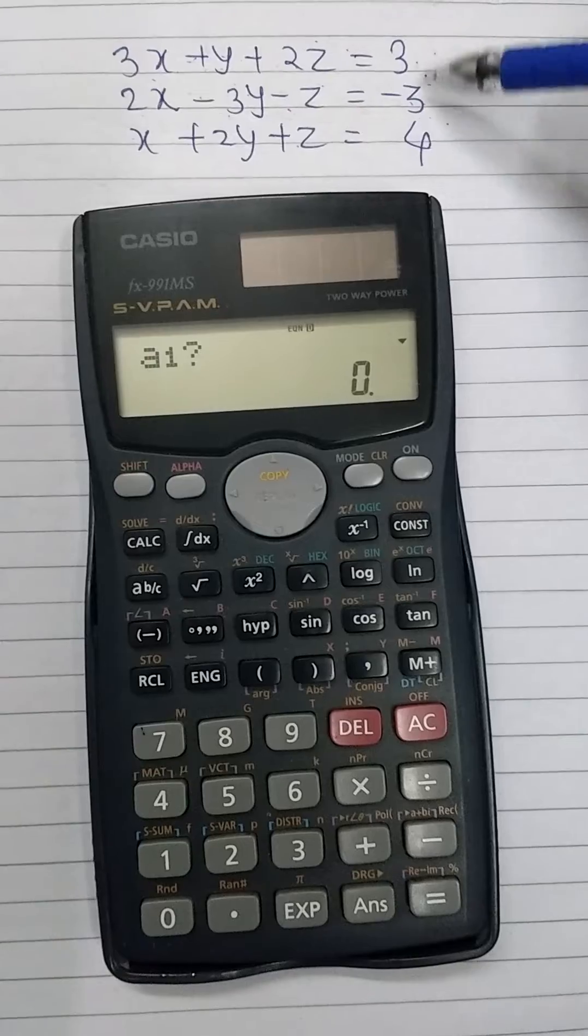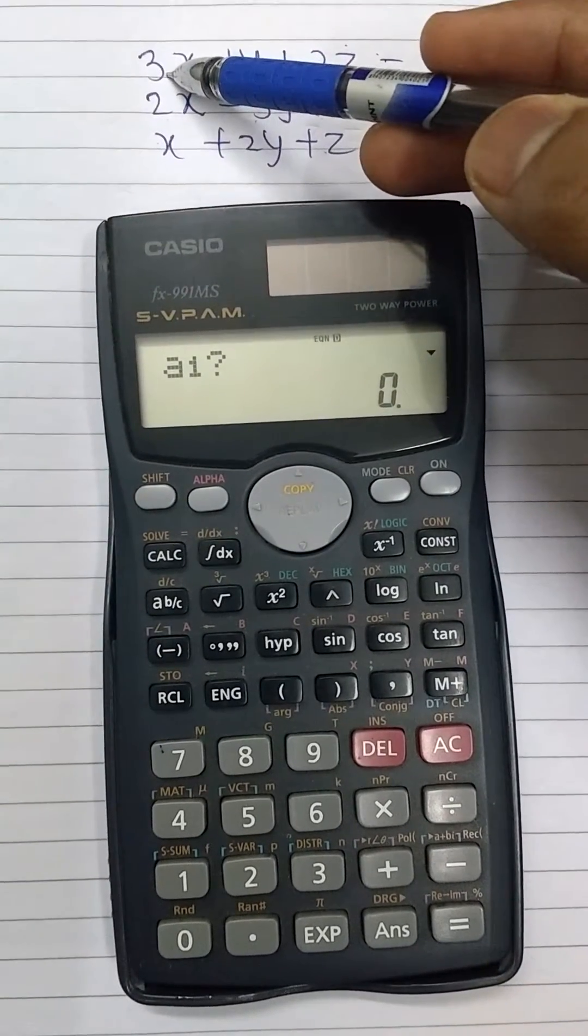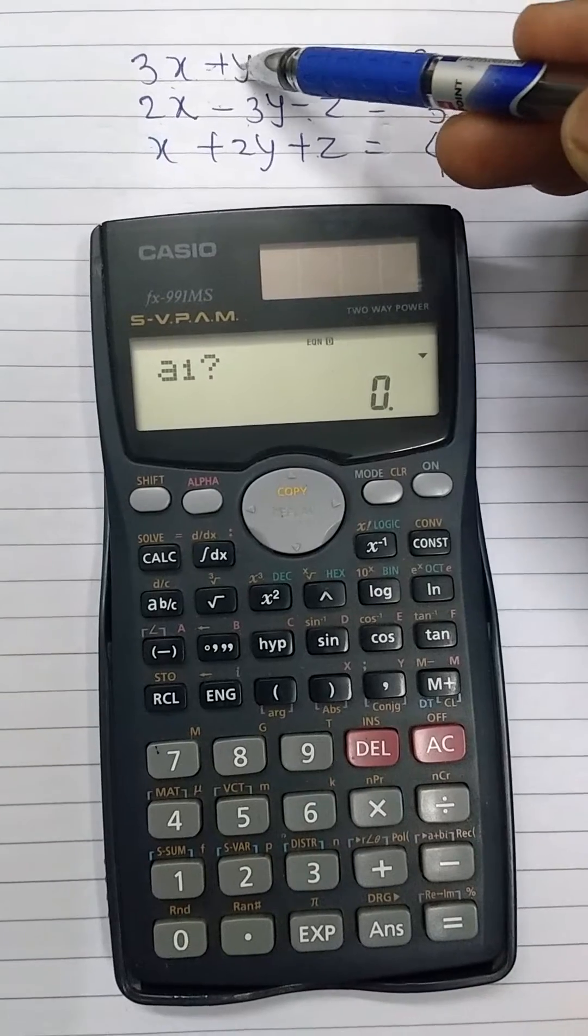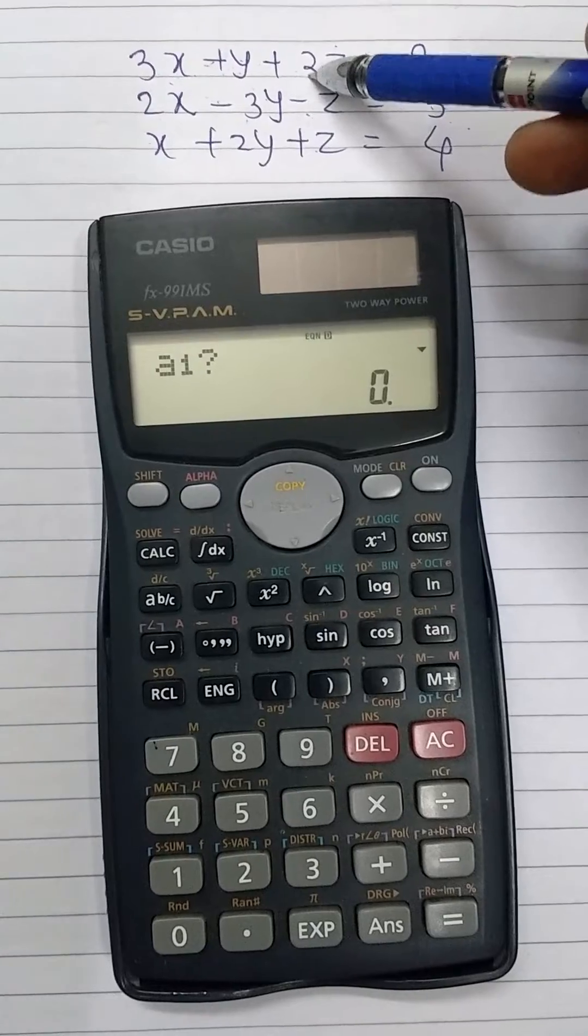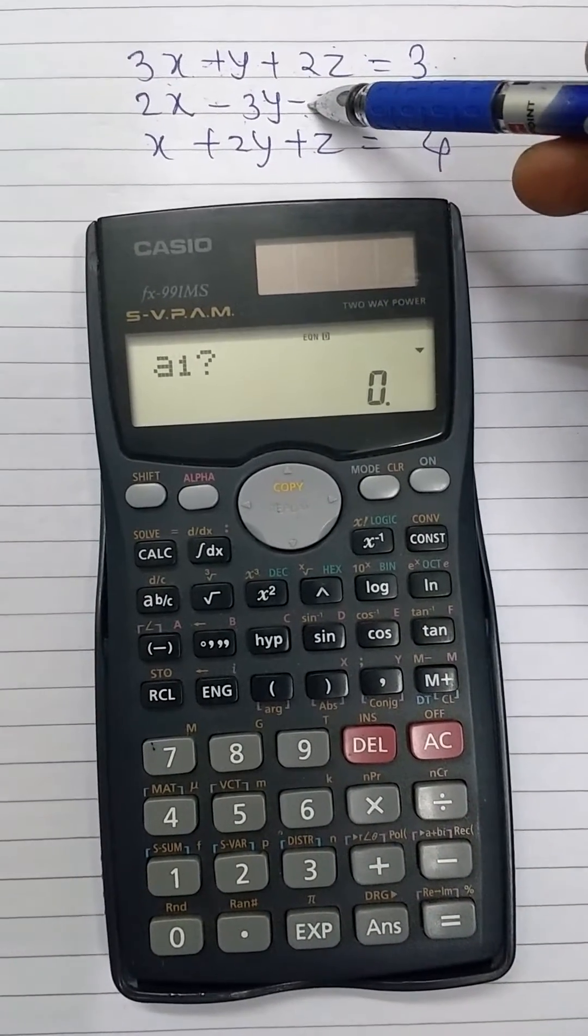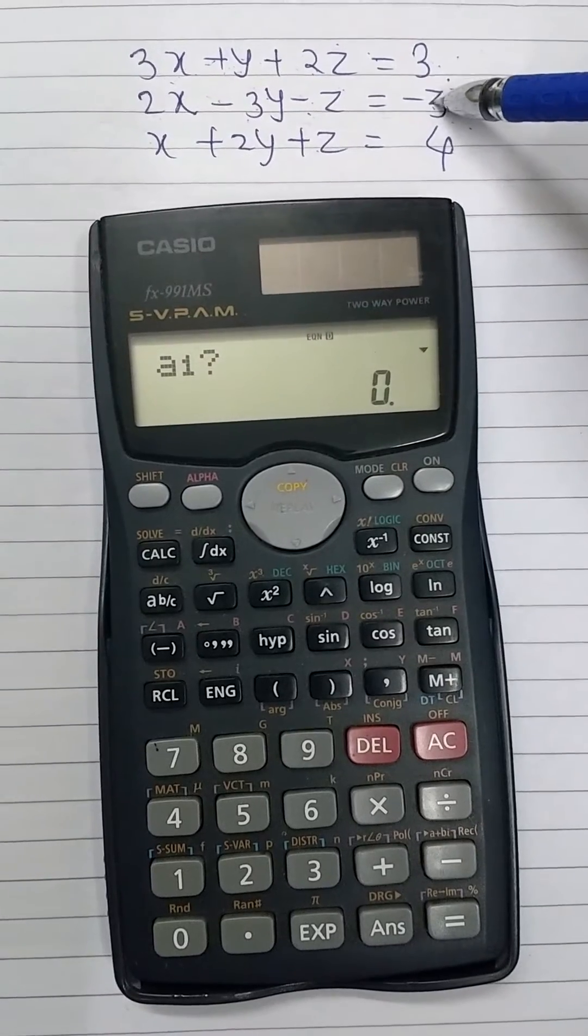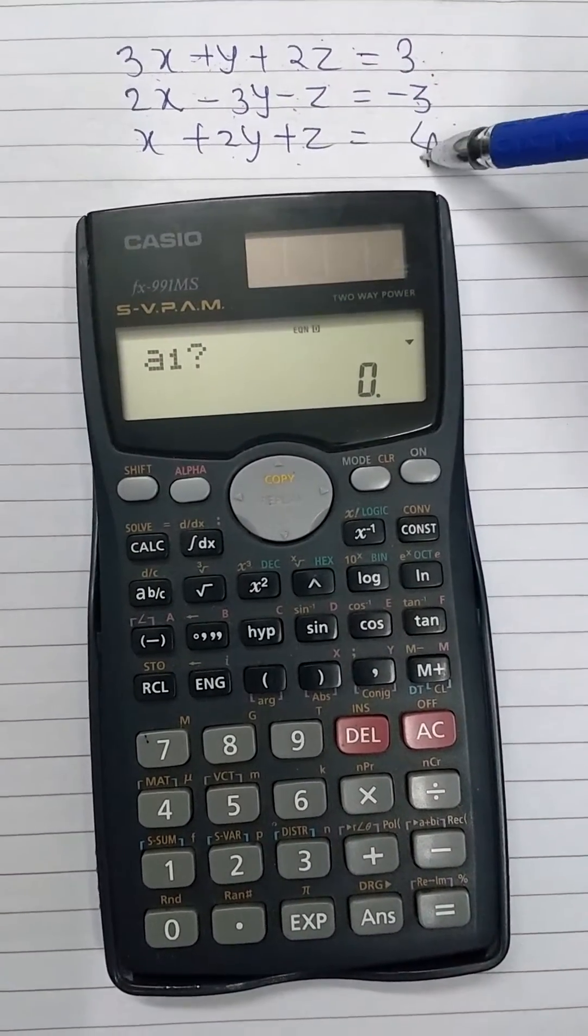See the 3 equations. Here, the coefficient of x in equation 1 is a1. The coefficient of y in equation 1 is b1. This is c1. This is d1. Similarly, a2, b2, c2, d2, a3, b3, c3, and d3.